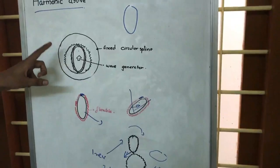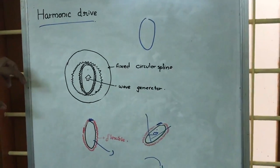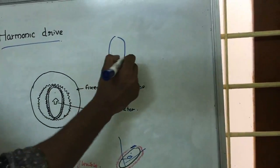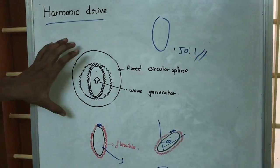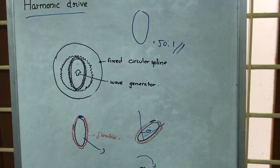The wave generator will rotate the ellipse, and because of that we are able to get the reduction ratio about 150:1. So harmonic drives are an arrangement like this by which we are able to get a good reduction ratio. Thank you.